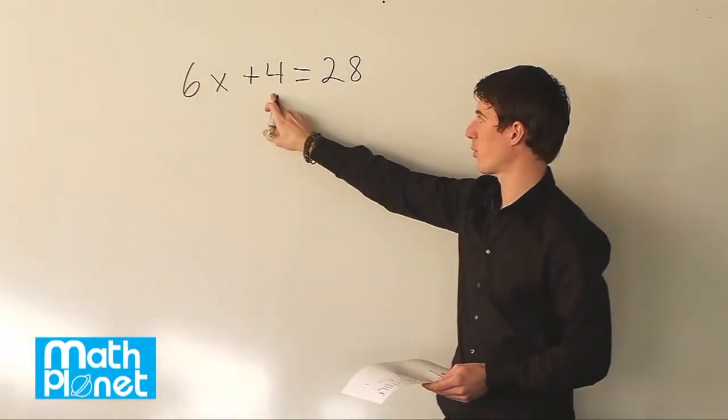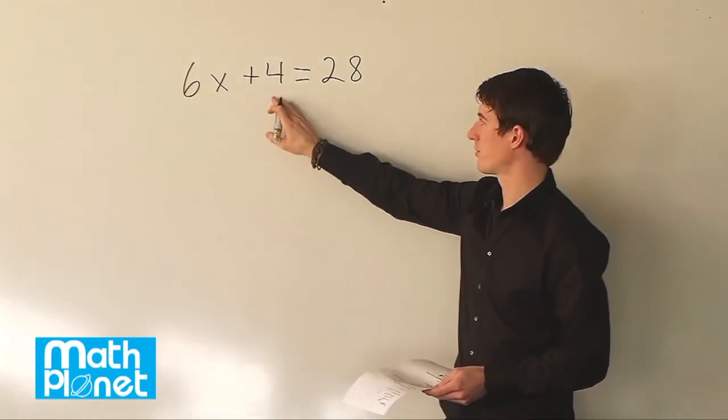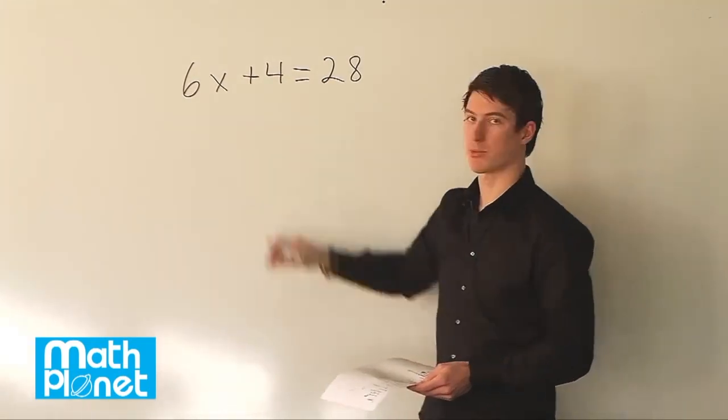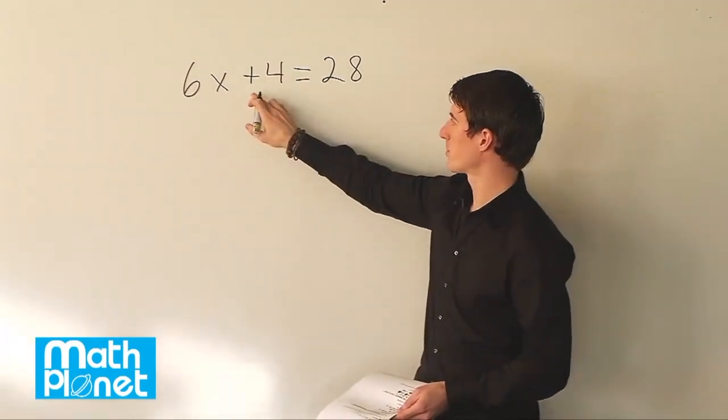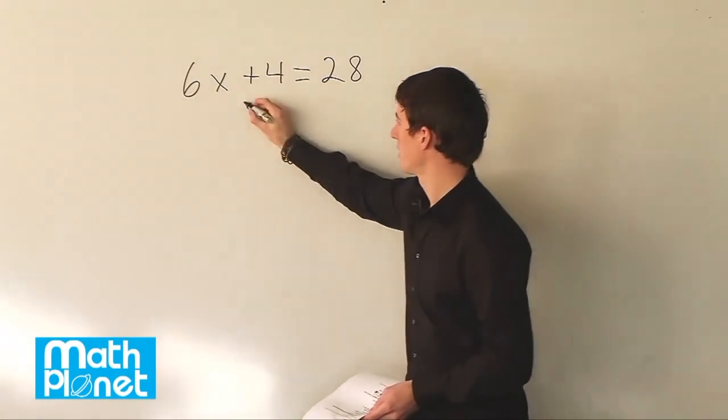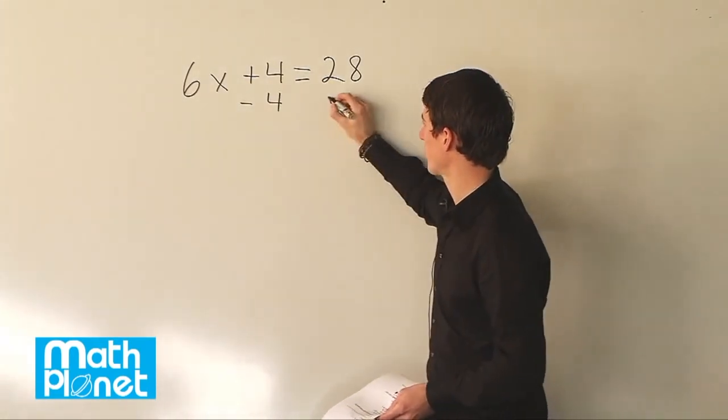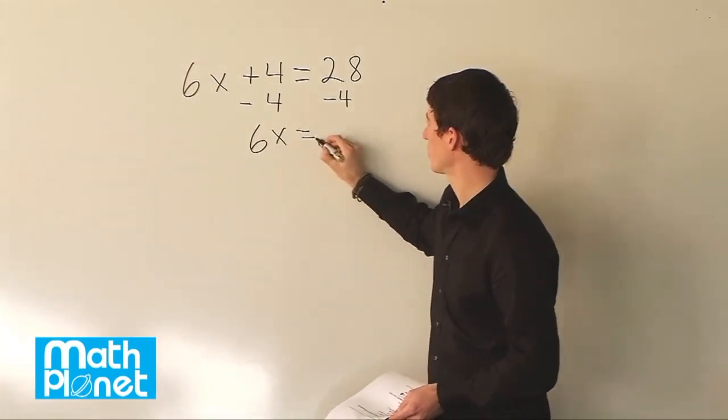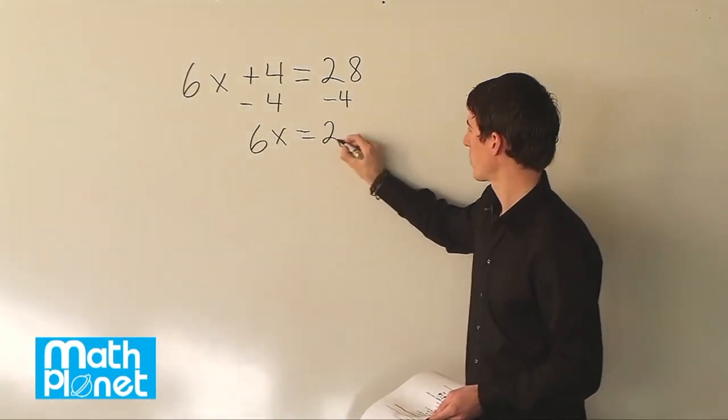So we have plus 4, the inverse operation of plus is minus, or the inverse operation of addition is subtraction. So we need to subtract 4 from both sides. So we have minus 4 and minus 4. That gives us just 6x equals 28 minus 4 which is 24.